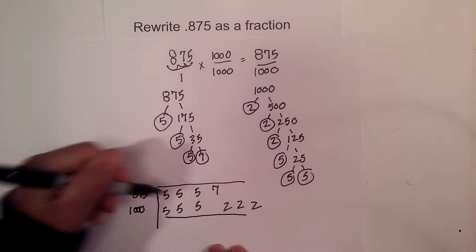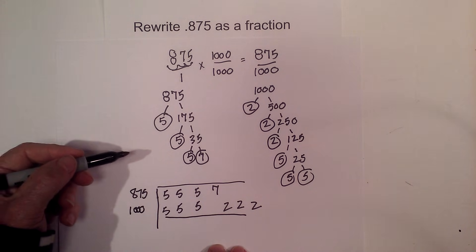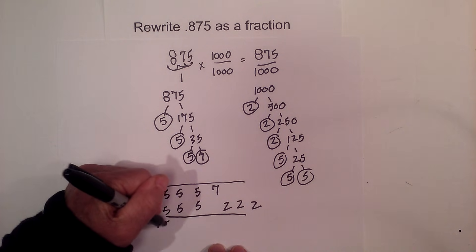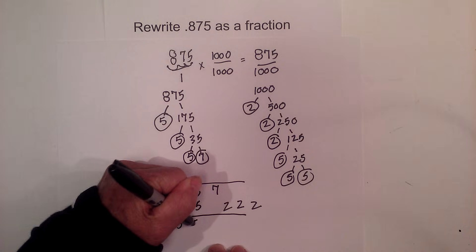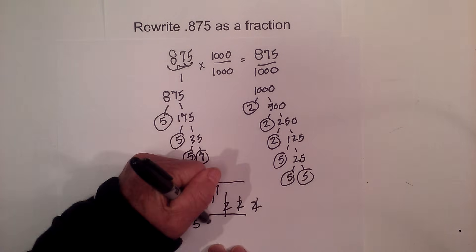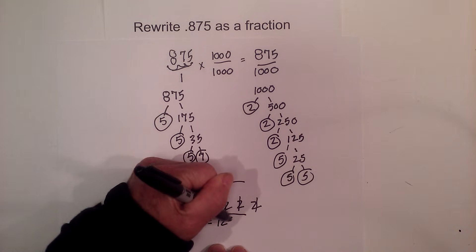Now to find the greatest common factor, you look for vertical pairs. Here's a vertical pair, here's a vertical pair, and another vertical pair. No, no, no, no, and no. So now I just multiply 5 times 5 times 5, and that equals 125.